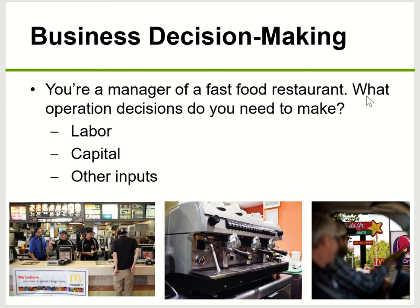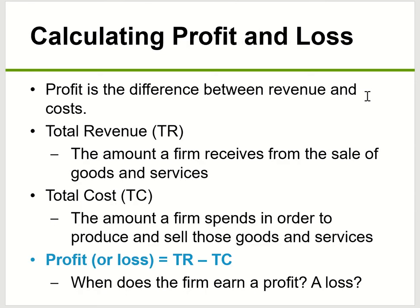First you need to know what is the goal for business. For any business, their goal is to maximize profit. But before you know profit, you're going to know what is the company cost. So imagine that if you're a manager for a fast food restaurant, what kind of operation decisions do you need to make? For example, how many employees to hire, what kind of machine to use, what kind of capital you use, and other inputs such as raw material and advertisement cost — all those costs you've got to think about.